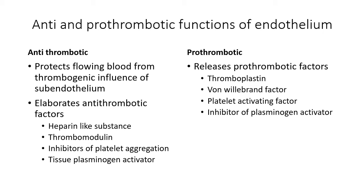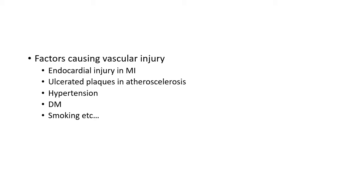A delicate balance exists between these anti- and pro-thrombotic functions in normal conditions. When endothelial injury occurs, this balance is disturbed and the thrombogenic subendothelium is exposed. Conditions causing vascular injury include myocardial infarction (which causes endocardial injury), ulcerated plaques in atherosclerosis, hypertension, diabetes mellitus, and harmful chemicals in cigarette smoke.